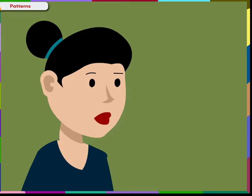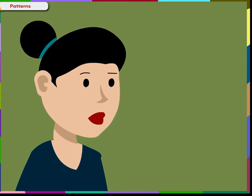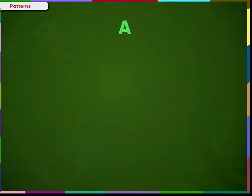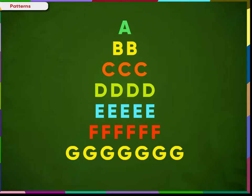identify and continue the pattern shown on the screen. A is repeated once. B is repeated twice. C is repeated thrice. D is repeated four times. E is repeated five times. So, F will be repeated six times. And G will be repeated seven times.